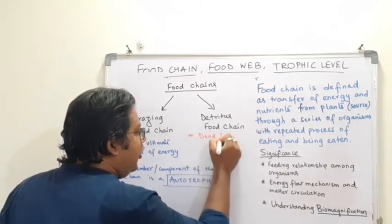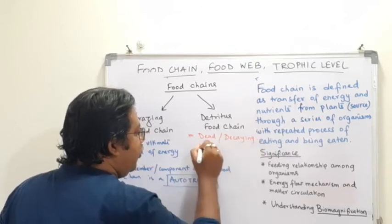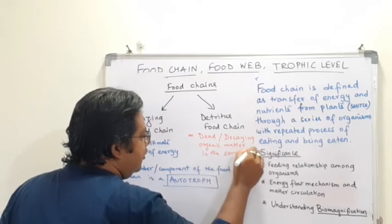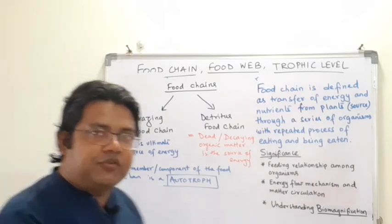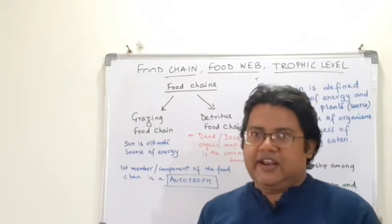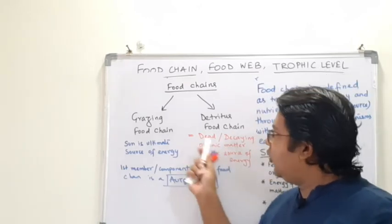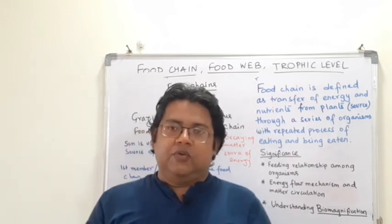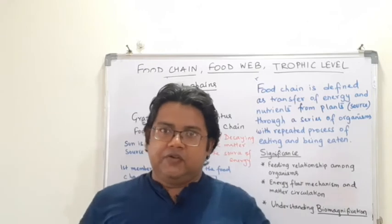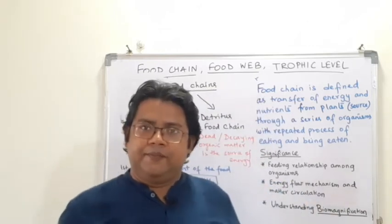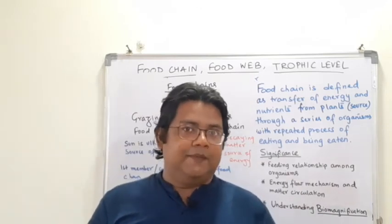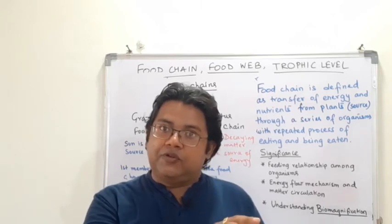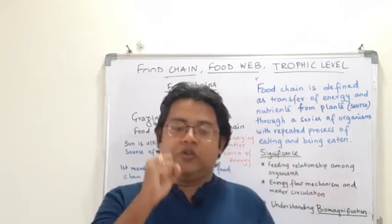The other type is the detritus food chain. In a detritus food chain, dead or decaying organic matter is the source of energy — not the sun. This food chain starts with dead or decaying matter as the initial source of energy. For example, suppose cow dung is there — it is waste, but there are organisms such as microbes that feed on that cow dung.